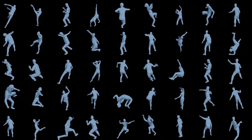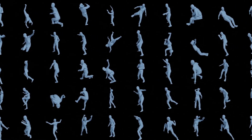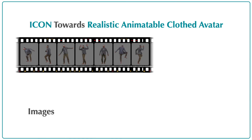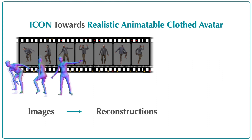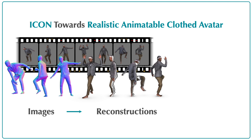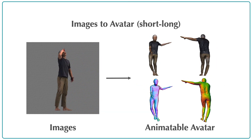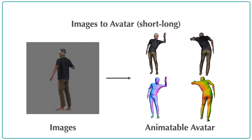Now we show the creation of an animatable avatar directly from a monocular video. We take a sequence of images containing the same subject in various poses as input. First, we use ICON to reconstruct 3D human shapes for each frame. Then we use a state-of-the-art avatar creation method, SCANimate, to create a realistic animatable avatar from these reconstructions. The created avatar can be animated with realistic pose-dependent clothing deformation.